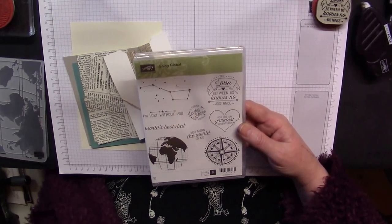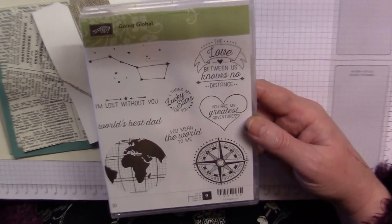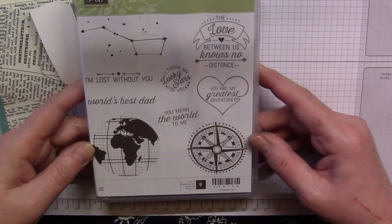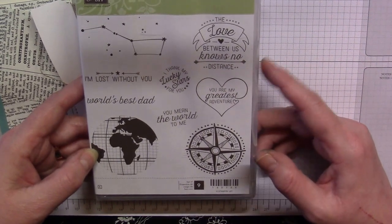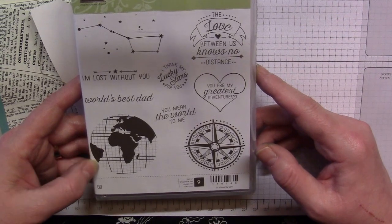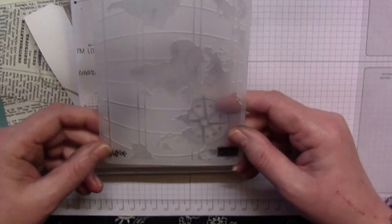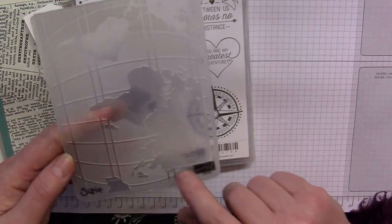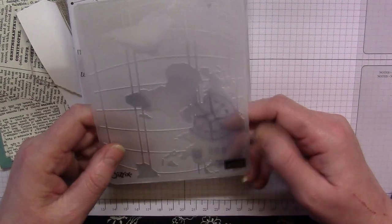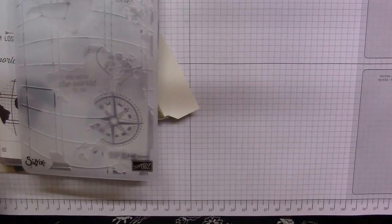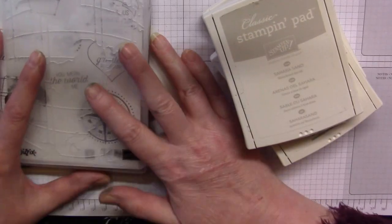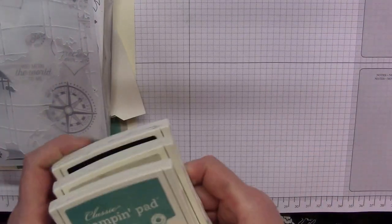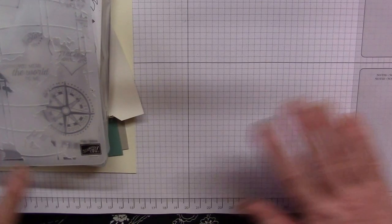I'm going to zoom you in now. Going Global is the stamp set - I've got the clear mount, but you could purchase it as wood mount if that's your choice. And along with that is the World Traveler textured impressions embossing folder. Then I've coordinated the ink pads with the cardstock pack: Sahara Sand, Lost Lagoon, and basic black tucked in there as well. I've kept it really very simple.